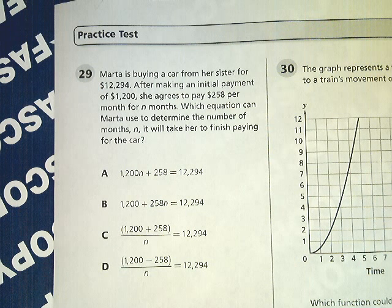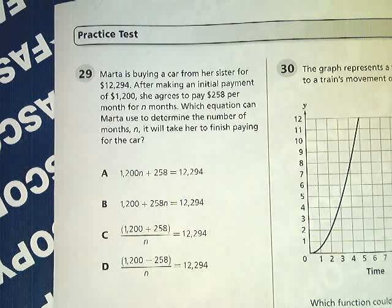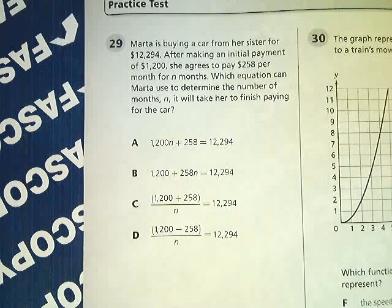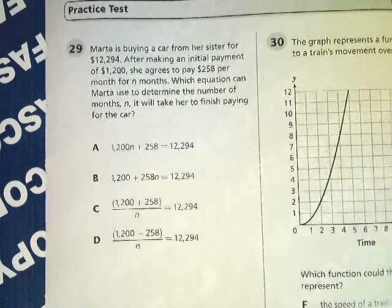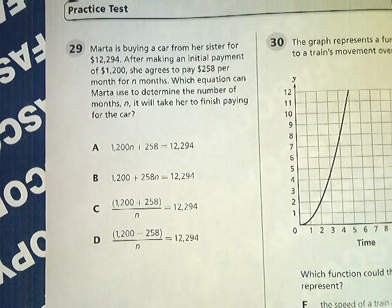Marta is buying a car for her sister for $12,294. How nice. After making an initial payment of $1,200, she agrees to pay $258 per month for n months. Which equation can Marta use to determine the number of months it will take her to finish paying off the car?